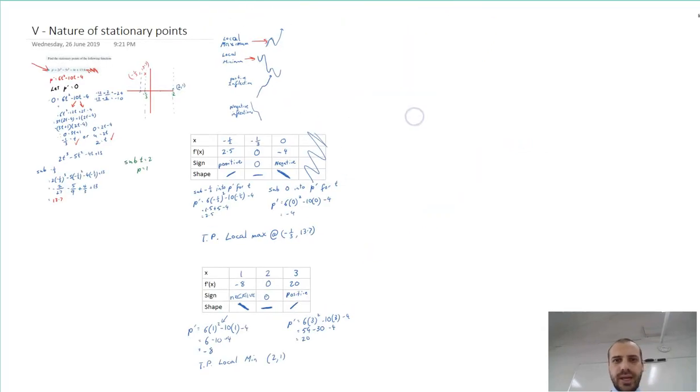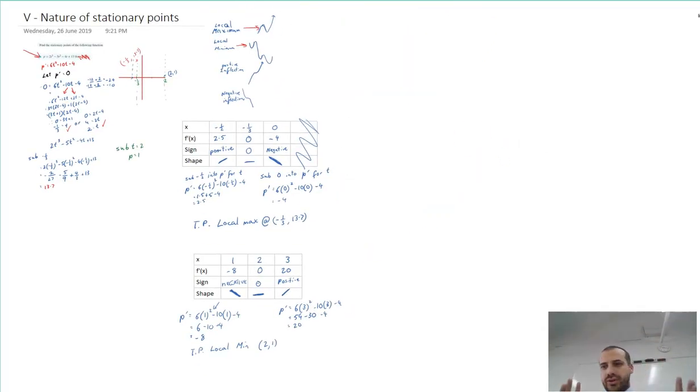A lot's going on there. With this video and the previous video, what we've done is find the nature. We found the stationary points themselves, and then we found the nature of those two stationary points. Video's been a bit long, but you can see that there's a little bit of work to do there. You've got to sub some values. Good luck.